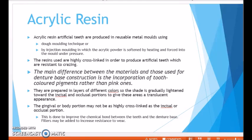Acrylic resin artificial teeth are produced in reusable metal molds. These metal molds are shaped according to natural teeth — incisors, canines, premolars, and molars — and they come in different sizes. Artificial teeth can be formed using dough molding technique or injection molding technique, in which acrylic powder is softened by heating and forced into the mold under pressure. These are the two techniques used to fabricate artificial teeth from acrylic resins.